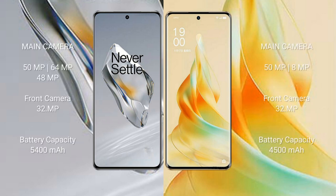OnePlus 12 features a rear triple camera setup with 50MP, 64MP, and 48MP sensors, and a 32MP front camera. OPPO Reno 9 Pro features a rear dual camera setup with 50MP and 8MP sensors, and a 32MP front camera.